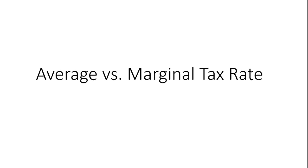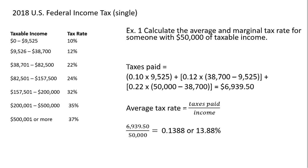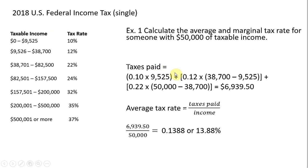In this video I'm going to look at average and marginal tax rates. Here I have the 2018 US federal income tax for people that are single. We have taxable income, which takes into account deductions, and the corresponding tax rate — these are the tax brackets. To illustrate, let's do a numerical example: we're going to calculate the average and marginal tax rate for someone with fifty thousand dollars of taxable income. The first thing we'll do is calculate the taxes paid.